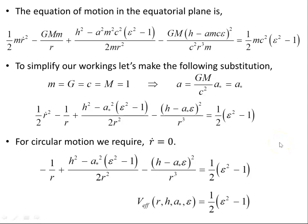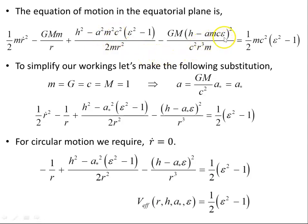The equation of motion in the equatorial plane is governed by this equation here. Small m is the mass of the particle object travelling in the equatorial plane of the source mass — that's the mass of the Kerr black hole, capital M. This is the spin parameter of the black hole, and c is the speed of light. Epsilon is the energy parameter of the object that is orbiting the black hole.